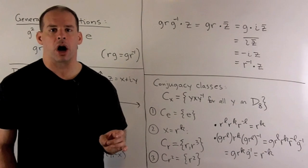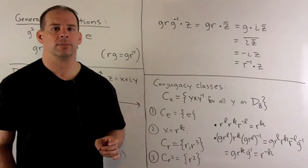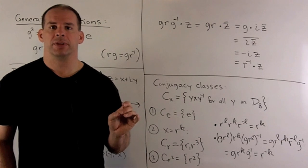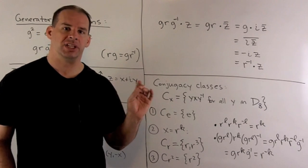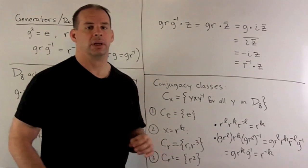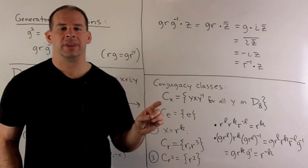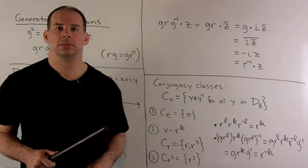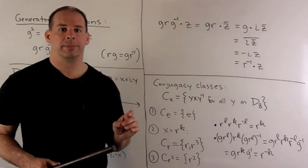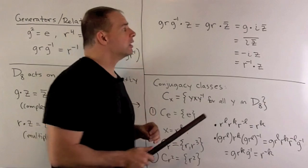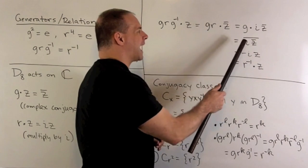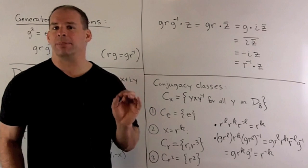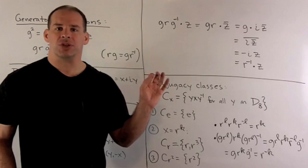Now let's apply the conjugate of R to an element Z in the complex plane. First, we're going to apply G inverse, which is the same as G, so we complex conjugate and send Z to Z-bar. Next, we apply R, so I multiply by i. Then we're going to take i·Z-bar and complex conjugate the whole thing. If I take the complex conjugate of a product, that's the same as the product of the complex conjugates. So Z-bar goes back to Z, and i goes to minus i. It's easy to show that multiplying by minus i is the same as acting by R inverse. So that's going to show our relation.